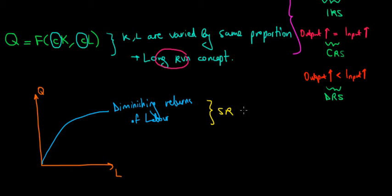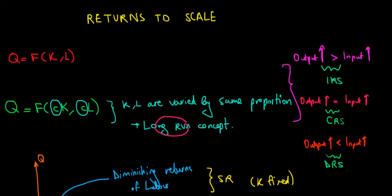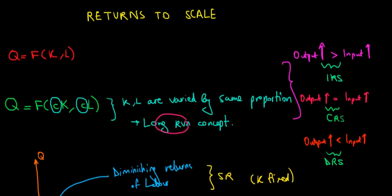Whereas in the case of returns to scale we're speaking about a long run concept because both of them vary. So decreasing returns to scale and diminishing returns are two different concepts, one is belonging to long run the other one is belonging to short run.